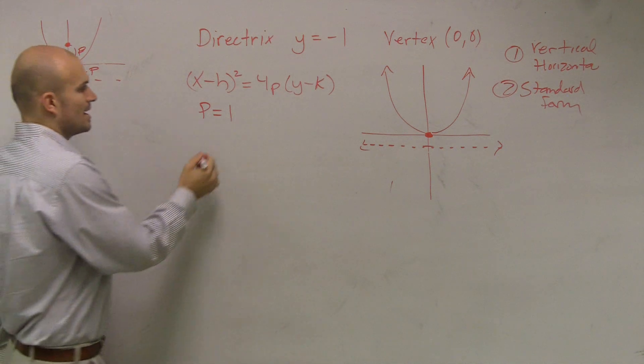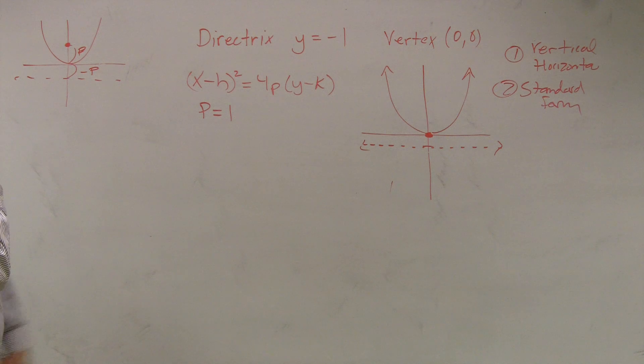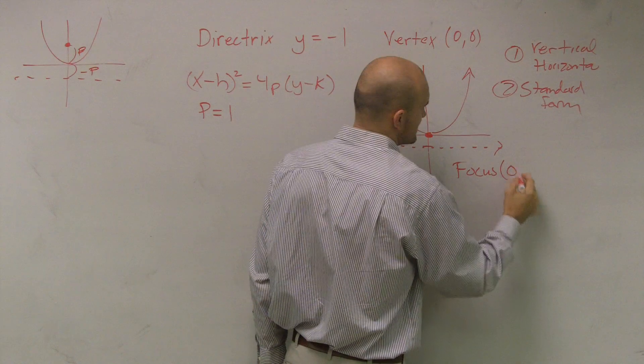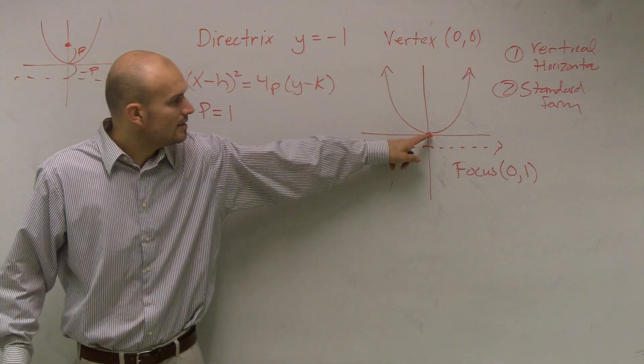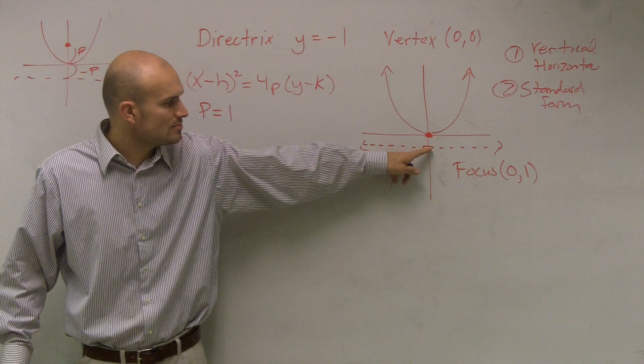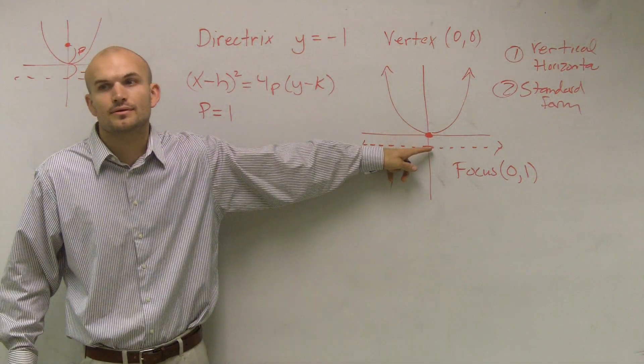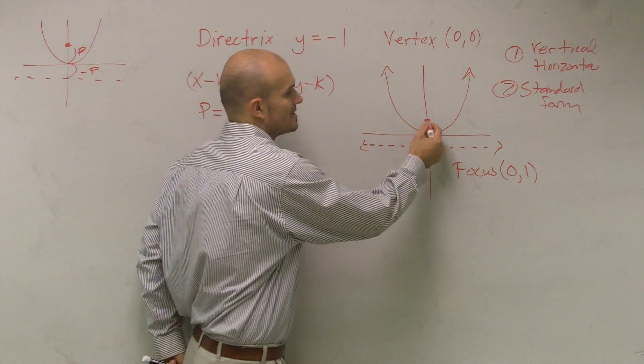So I can say that the focus, even though it doesn't ask us this, is at 0, 1. The distance from my vertex to my directrix is 0 to negative 1. So therefore, the focus is going to be at 0, positive 1.